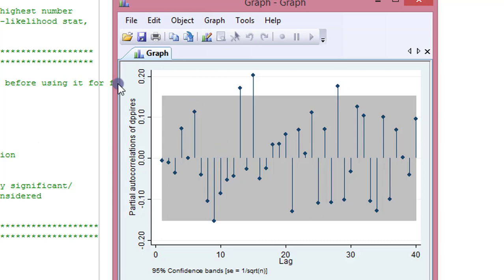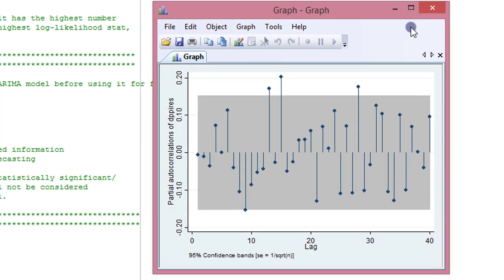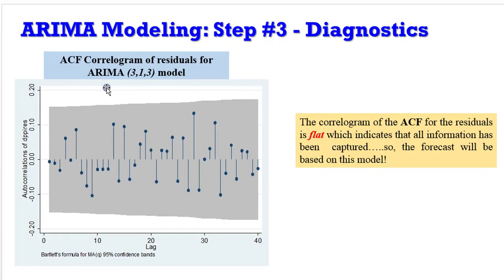So let's go to PowerPoint where I have moved all these graphs for better explanation. So like I said before, this is the ACF of the correlogram for the residuals for the ARIMA 3,1,3 model. It is flat, lies within the 95% confidence interval. The little note here states that the correlogram of the ACF for residuals is flat, which indicates that all information has been captured. Therefore, the forecast will be based on this model.